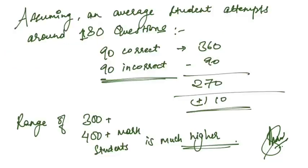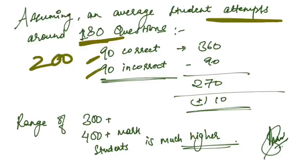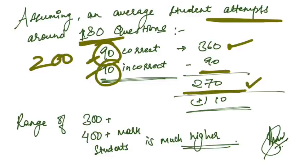Assuming an average student attempts around 180 questions out of 200, they get 90 correct and 90 incorrect questions. So 360 is the score and minus 90, so around 270 you can get. Plus minus 10 or 15, so that gives a range of 260 to 280.